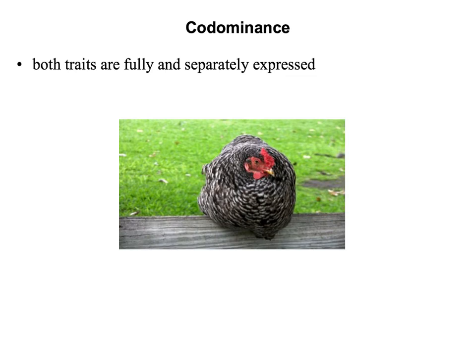The first type of non-Mendelian inheritance is known as co-dominance. In co-dominance, both traits are fully and separately expressed. This chicken right here is known as erminette, and it has both white and black feathers — we see white 100% and black 100%, not a blend or anything like that.